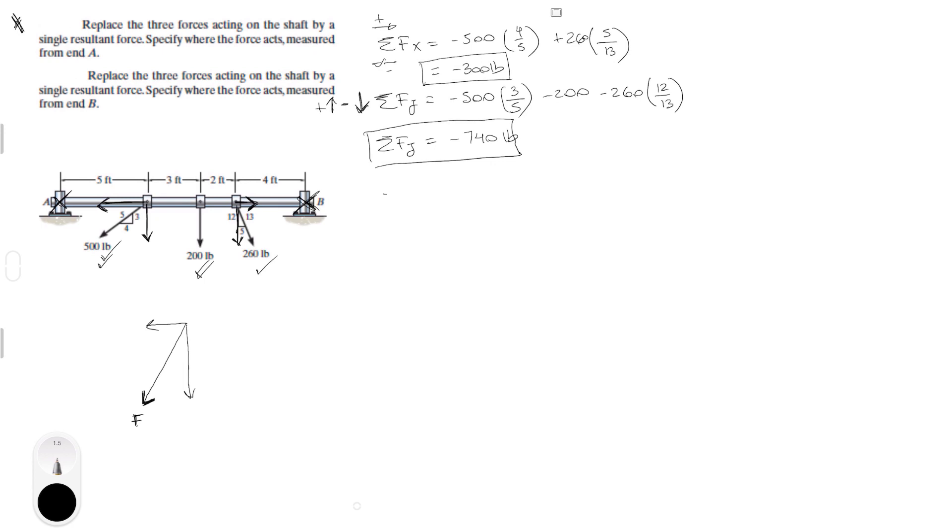Now, we've got to find the sum of the moments about A to do the first part, assuming counterclockwise is positive, is equal to the Y component of the first force, which we know is 500 times 3 over 5. But we've got to multiply it by the lever arm, which is this one, which is 5. And since counterclockwise is positive, this would be negative, because it's trying to turn the shaft this way. For the second one, which is 200 pound force, it's also generating a negative counterclockwise motion.